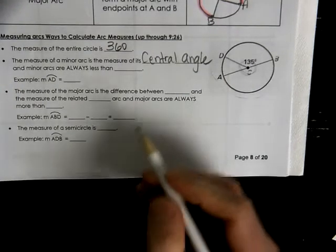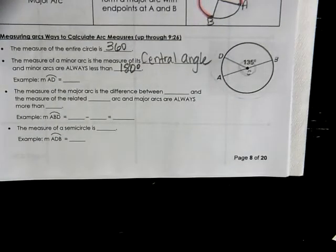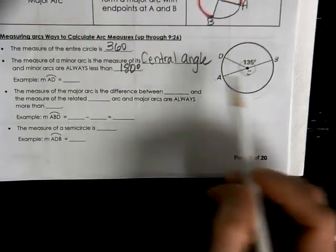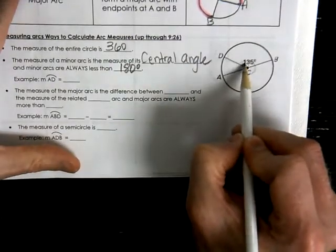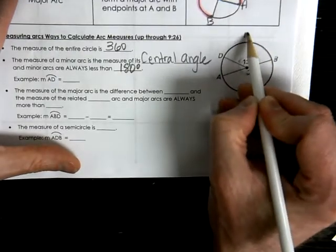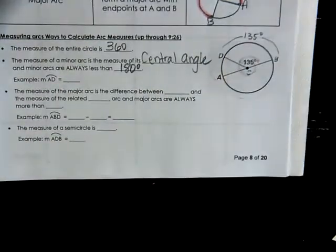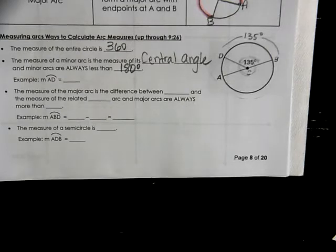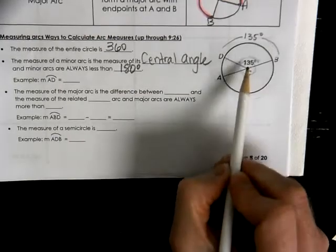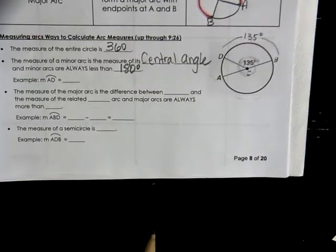A minor arc is always less than 180 degrees. So what they're talking about with the central angle: if we have 135 degrees for our central angle, then the minor arc is also going to be that same angle value. It's not the length of it — we call that something else, arc length. This is the measure of the arc, and the measure of the arc is in a degree value. Whatever the central angle is will match the intercepted arc.